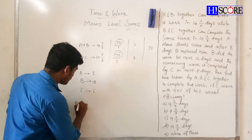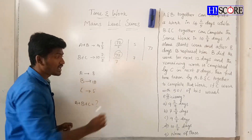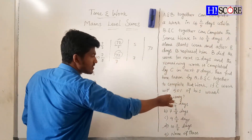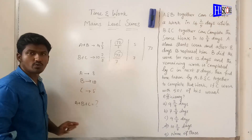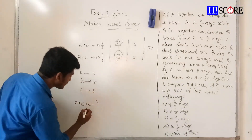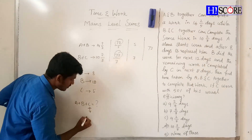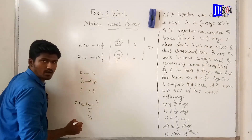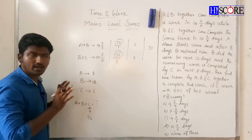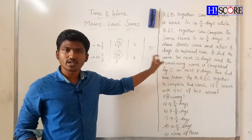A, B, C together — that is the condition. If C works with 50% of his usual efficiency, C's efficiency becomes C divided by 2. So if you work with 50% of your efficiency, the effective efficiency will be halved.